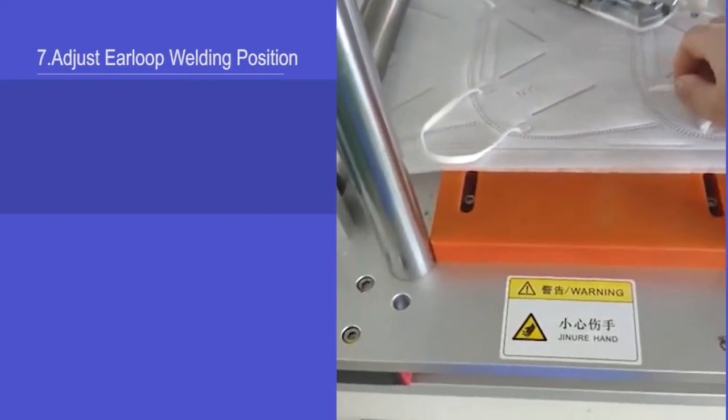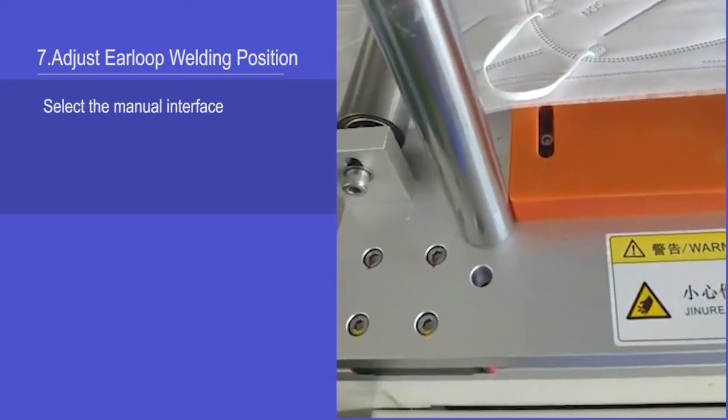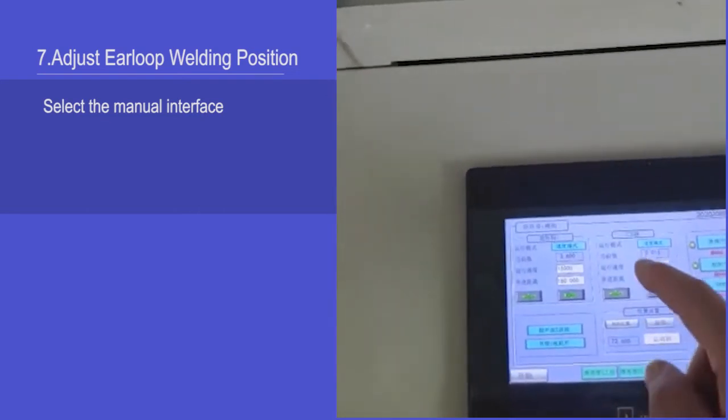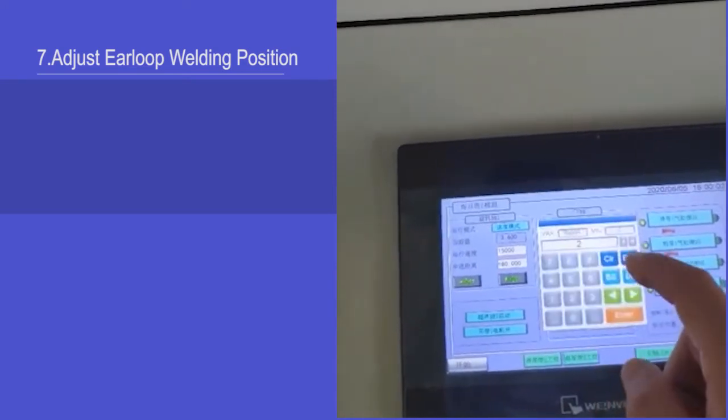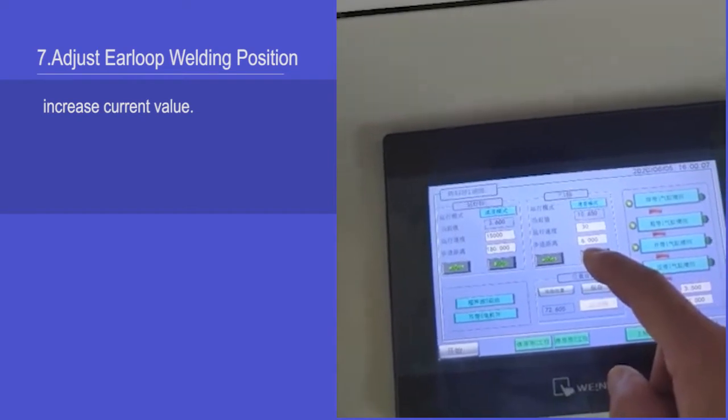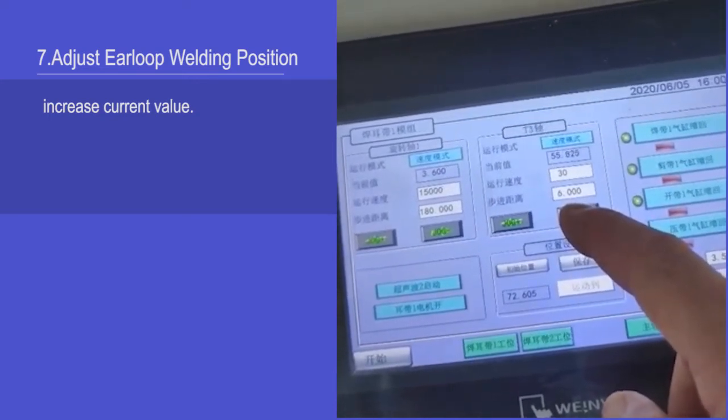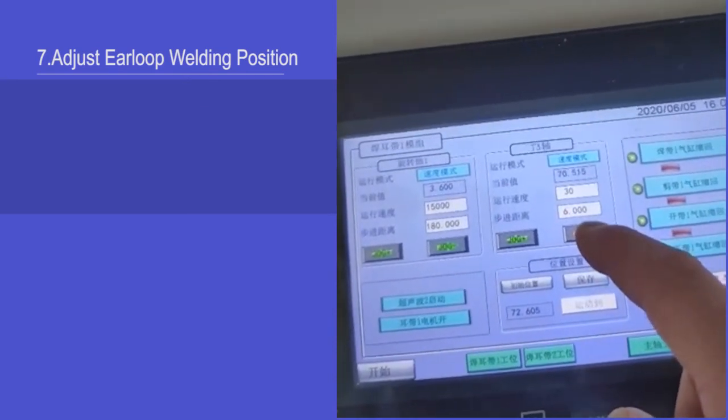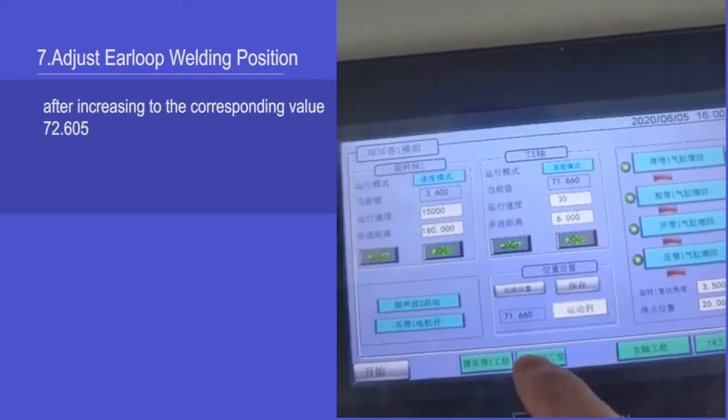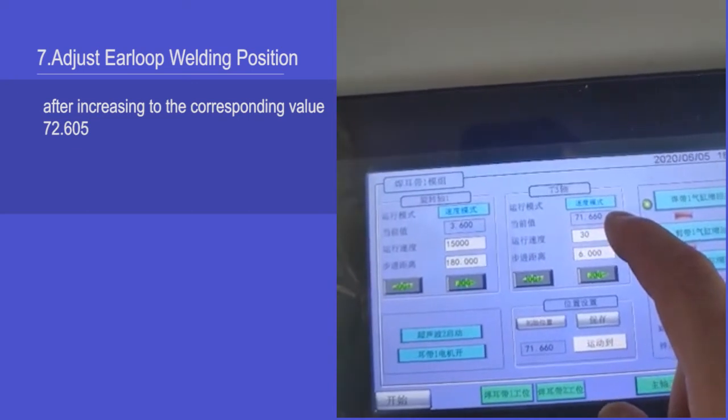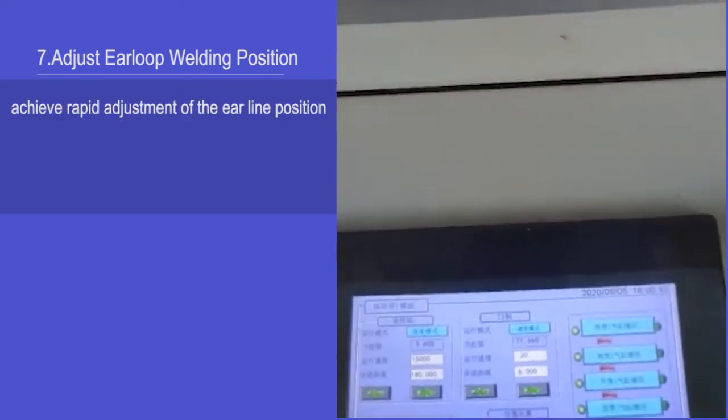The air loop welding position: select the menu introduce, then T3 window. Increase current value. After increasing to the corresponding value 72.605, then select save. Achieve rapid adjustment of the air loop position.